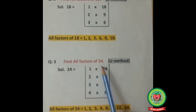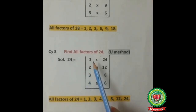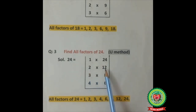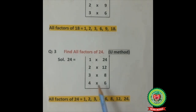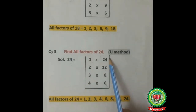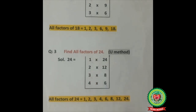Find all factors of 24. Start from 1. Twenty-four divisible by 1 at 24, so 1 multiply 24. Twenty-four divisible by 2 at 12. Twenty-four divisible by 3 at 8. Twenty-four divisible by 4 at 6. Is 24 divisible by 5? No. Is 24 divisible by 6? Yes — but it gets repeated, so we will not write it again, and we turn it as a U shape.